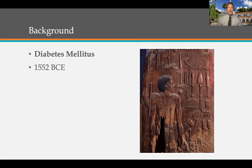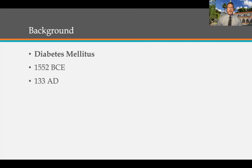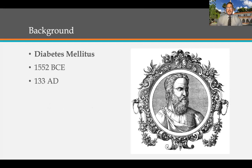The modern-day description we use for what Hesse-Ra saw is polyuria. In 133 AD, diabetes was described as the melting down of flesh and limbs into urine. This first describes the relationship between diabetes, ischemia, and the subsequent loss of limbs.